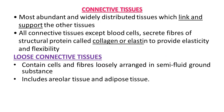The second type of tissue is connective tissue. As the name suggests, it connects — it is the most abundant and widely distributed tissue, which links and supports other tissues. All types of connective tissue except blood cells secrete fibers of structural protein.